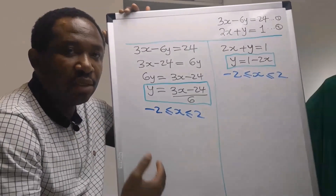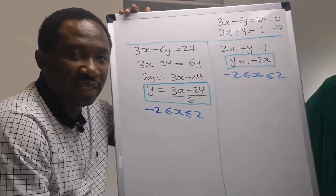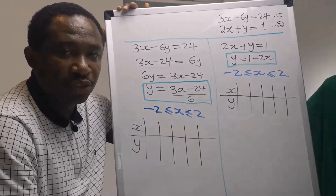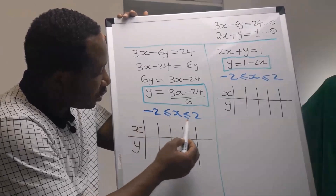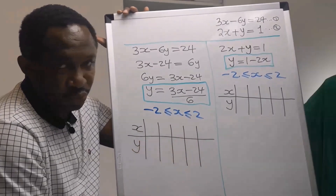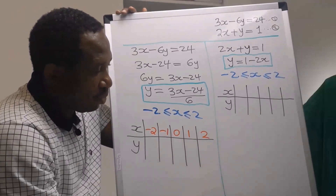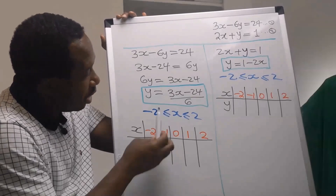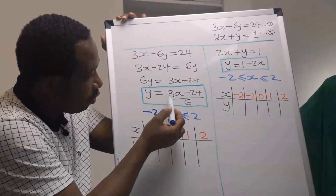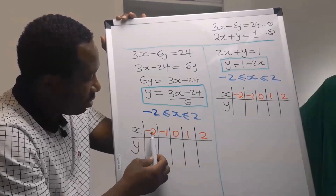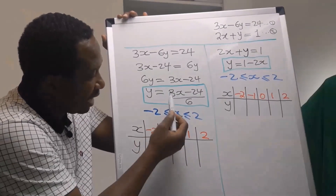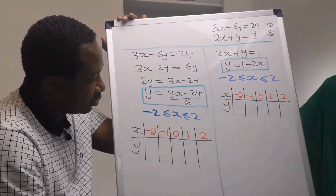Next we are going to draw a table for both equations, considering the range of values between minus two and two. For table one from equation one, when x equals minus two, I multiply 3 by minus two to get minus six, then minus six minus 24.